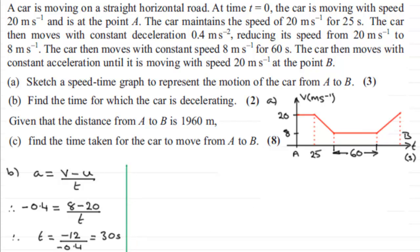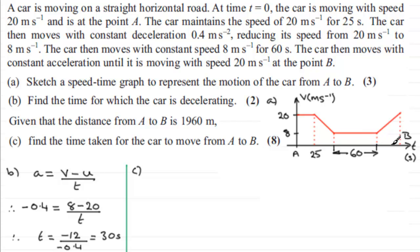Now in part C, we're given that the distance from A to B is 1960 meters and we've got to find the total time taken for the car to move from A to B. The distance covered is represented by the area under the graph, so all we need to do is work out the area of all the individual shapes below the graph.